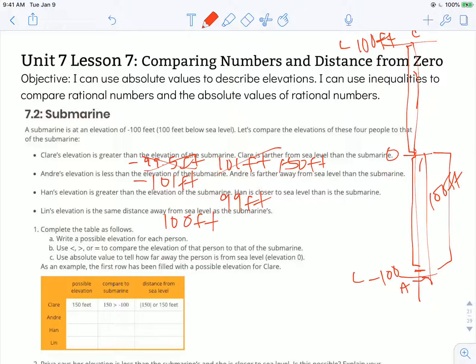So for Andre, we decided he was at negative 101 feet. Negative 101 is less than negative 100, and the absolute value of negative 101 is 101 feet. That's how far away he is from sea level.